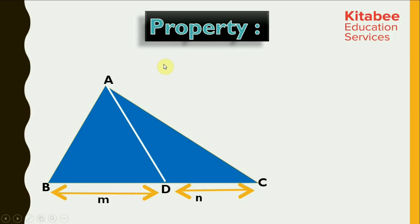Let's understand a property which doesn't have a name actually, but which is very fundamental in solving problems related to similarity. Let us say that we have a triangle ABC in which we have a line drawn from the vertex A on the base BC, which divides it into two parts. Let's say the lengths of these two parts are M and N units.